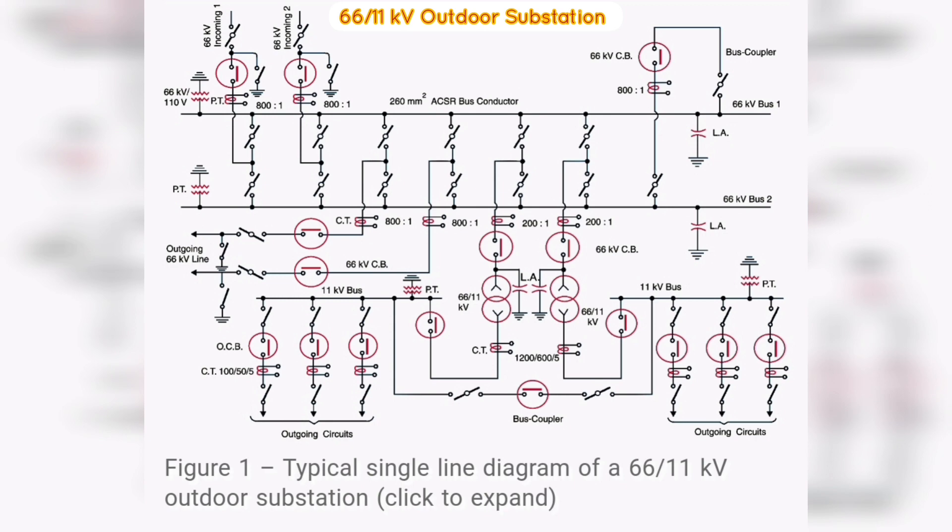Next, we learn about the potential or voltage transformers (PTs or VTs) and current transformers (CTs), suitably located for supply to metering and indicating instruments and relay circuits, not shown in the figure.